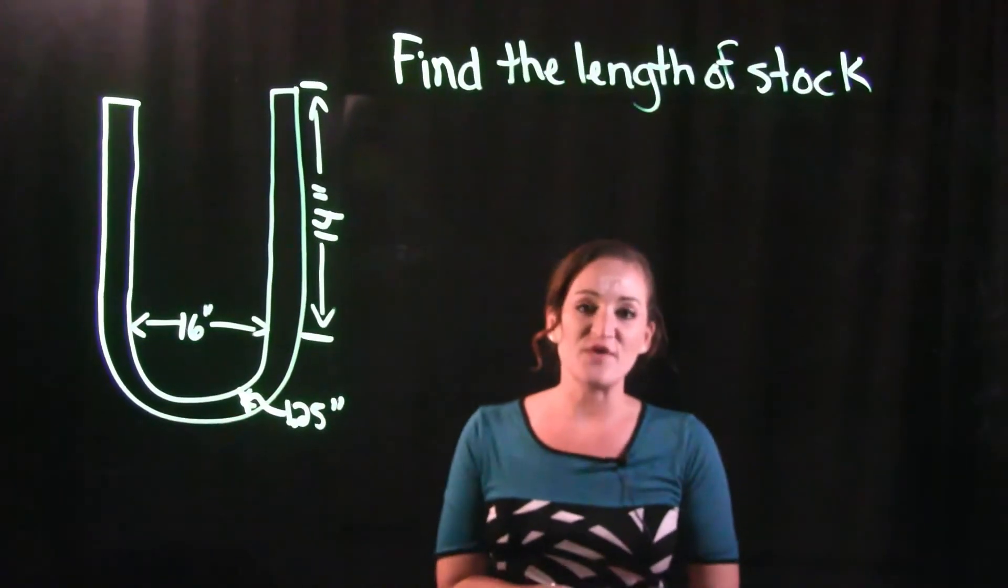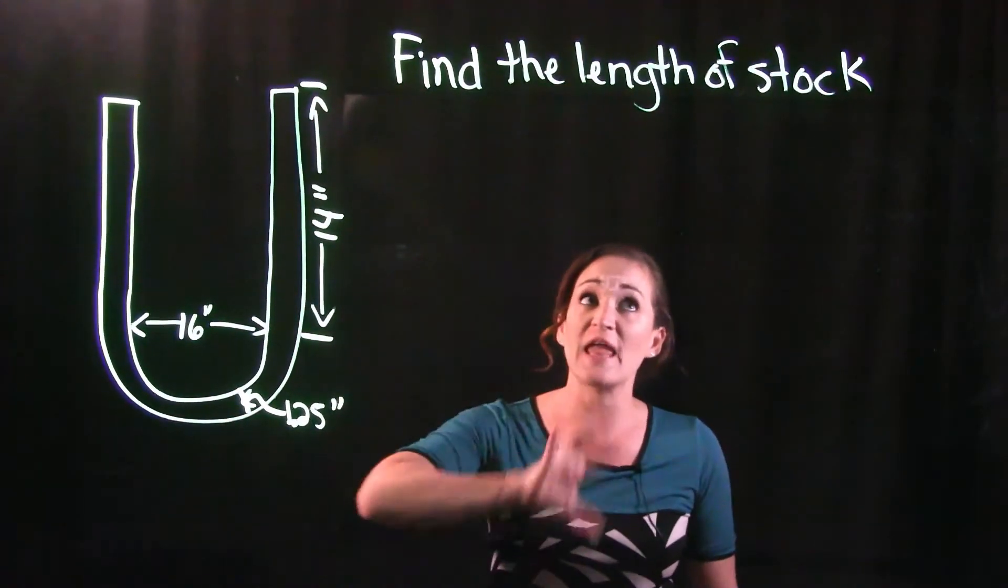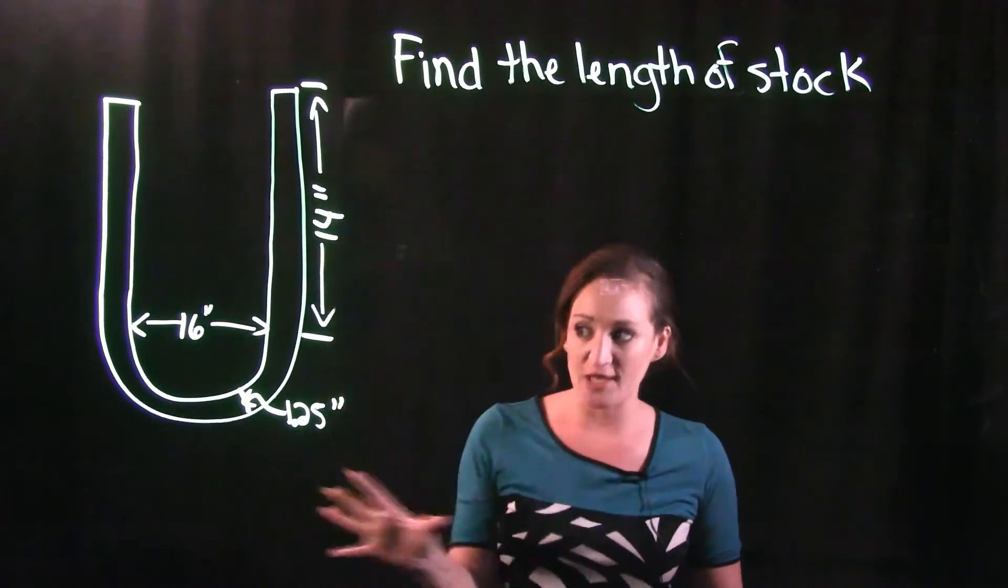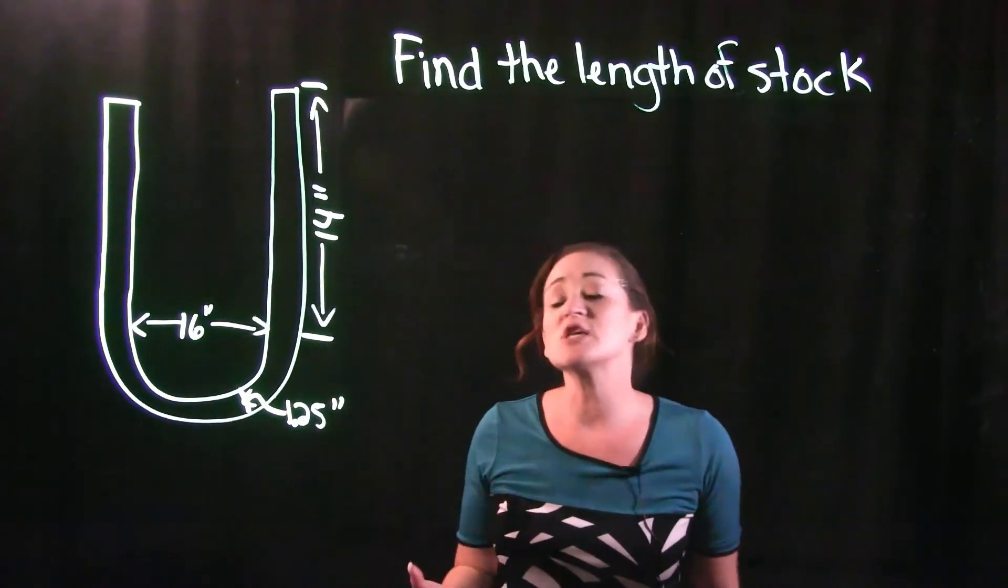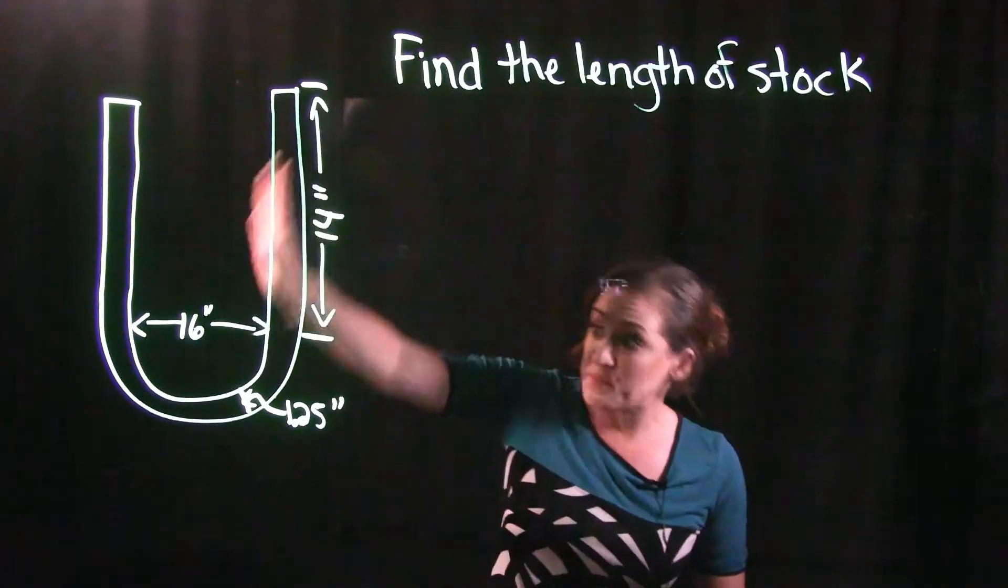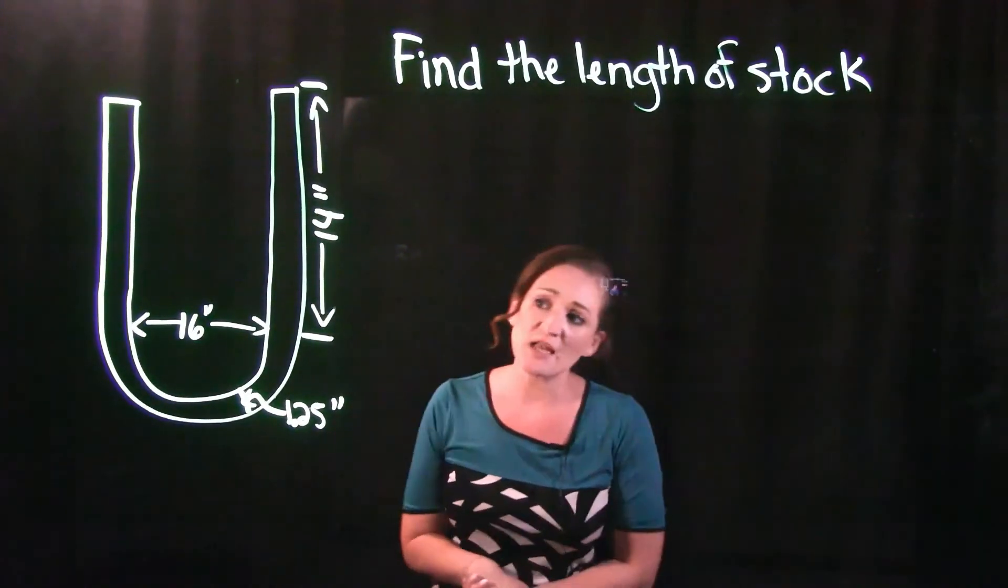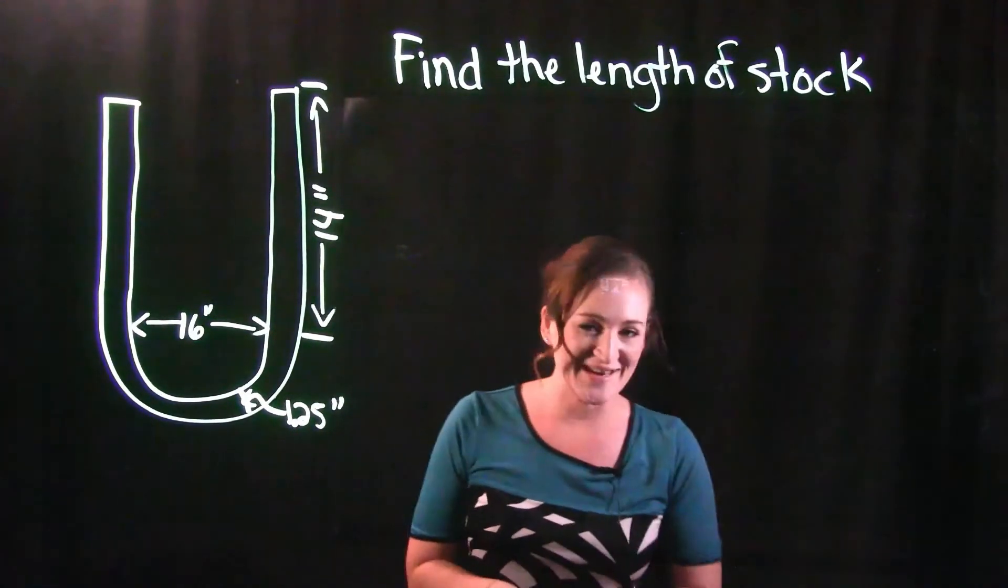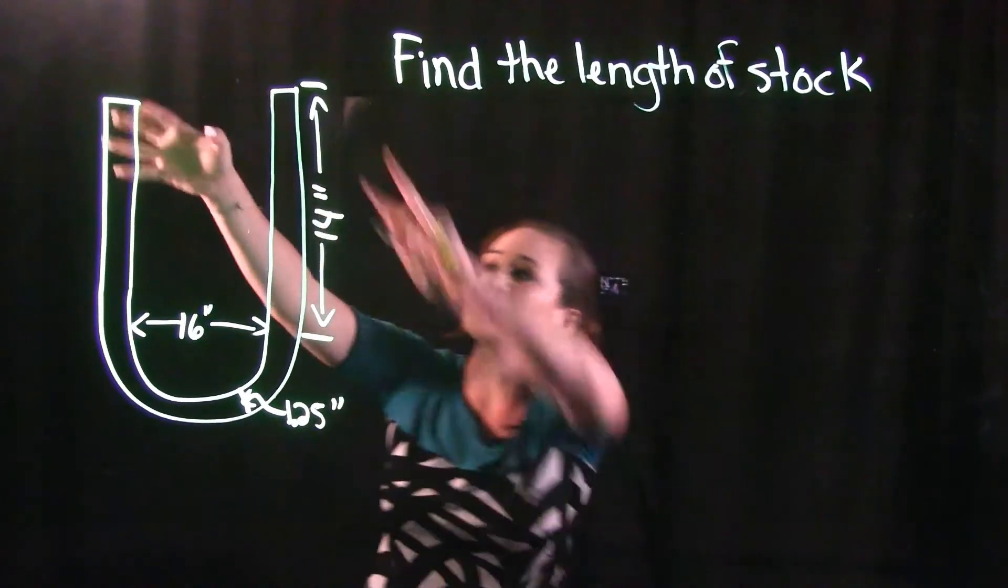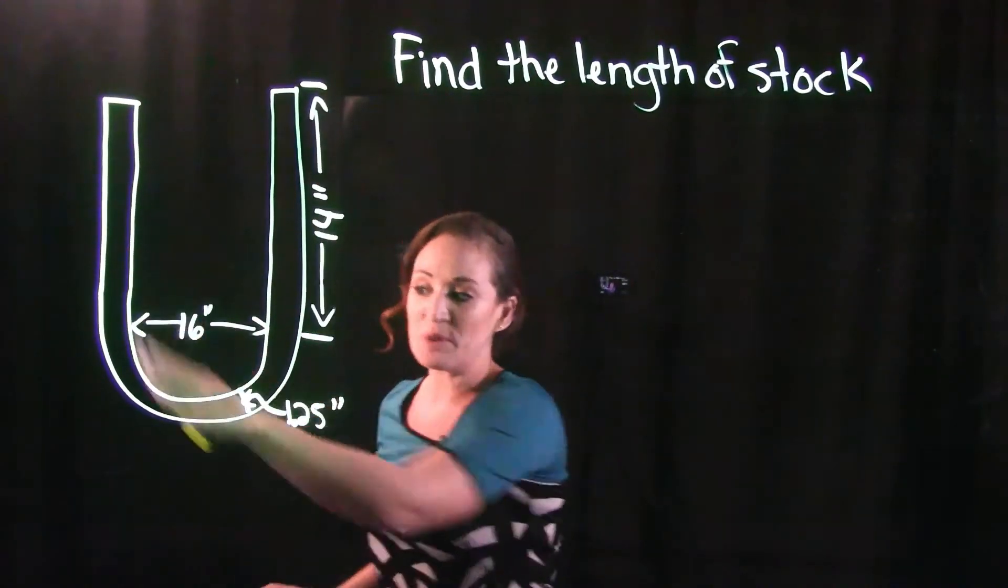Hey guys, this video is going to focus on how to find the length of stock of this particular figure here. Essentially what we're doing is finding the perimeter of this. If we're taking a look at this figure here, we see that we do have some straight sides to it, but we also have a circular piece.